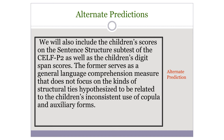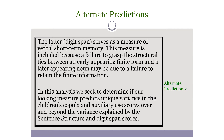'To address specific aim two, we will use regression analysis and ask if the mean percentage of looking to the target serves as the predictor of their use of copula and auxiliary forms. We will also include the children's scores on the sentence structure subtest of the SELF P2, as well as digit span scores. The former serves as a general language comprehension measure, while digit span is a measure of verbal short-term memory — included because failure to grasp structural ties between an early appearing finite form and a later appearing noun may be due to a failure to retain the finite information.' So he has the core hypothesis, or maybe comprehension, or maybe short-term memory. These data will inform all of these hypotheses.